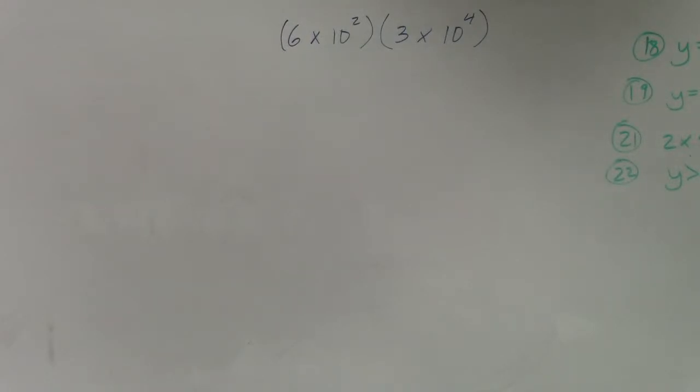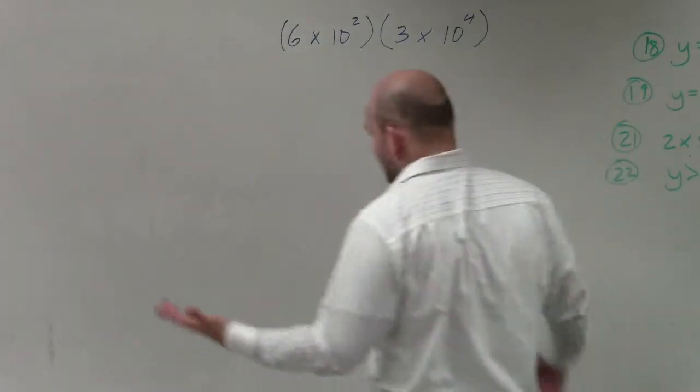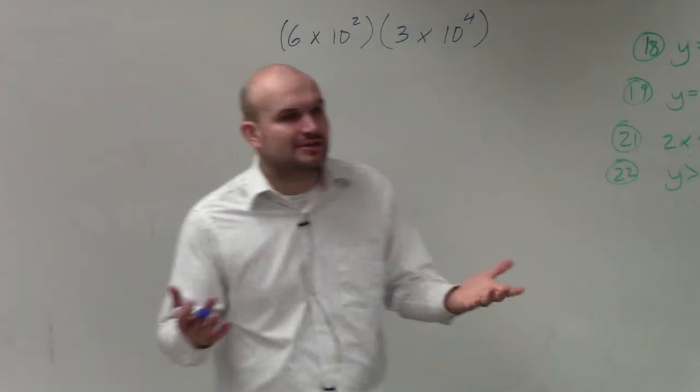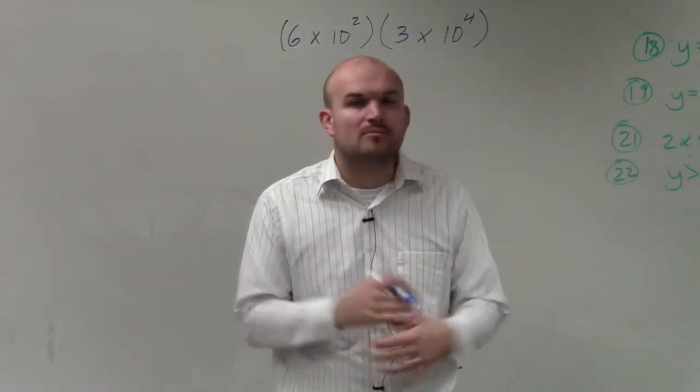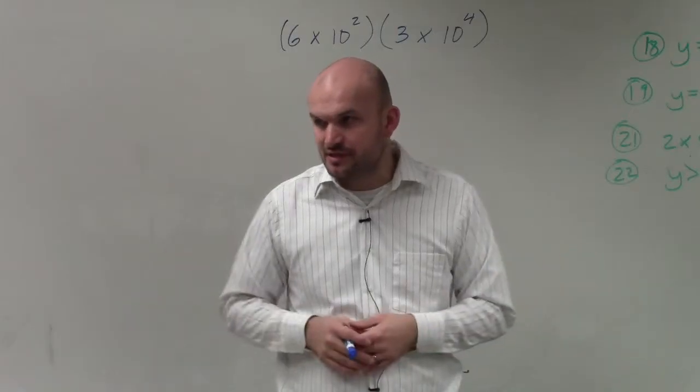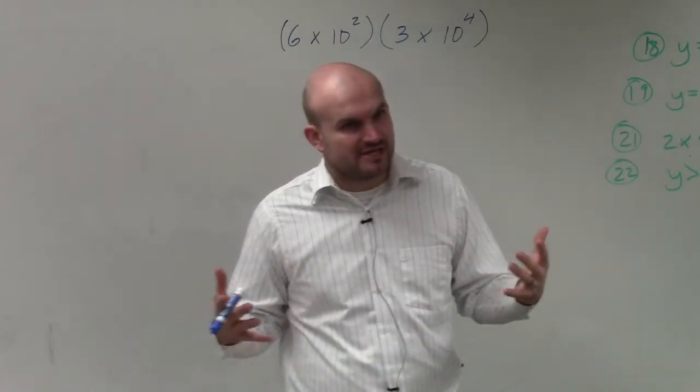So in this example, I have 6 times 10 to the second power times 3 times 10 to the fourth power. What I'd like you to understand is when we are multiplying in scientific notation, the easiest thing is to keep it in scientific notation.